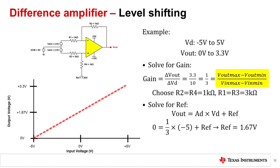Another way to think of gain is by following the output equation. Let's select our resistors such that the gain, or attenuation in this case, is 1/3. In order to calculate the required reference voltage, let's go back to the original output equation: Vout equals AD times VD plus ref. When VD is negative 5, we want Vout to be 0. Plugging these variables into the equation and solving for ref, we get ref equals 1.67 volts. Now, if we sweep the input from negative 5 volts to positive 5 volts, we will see 0 to 3.3 volts on the output. This example combines altering the resistor values to achieve attenuation and making use of the reference pin to level shift the output to a usable range for the ADC downstream.